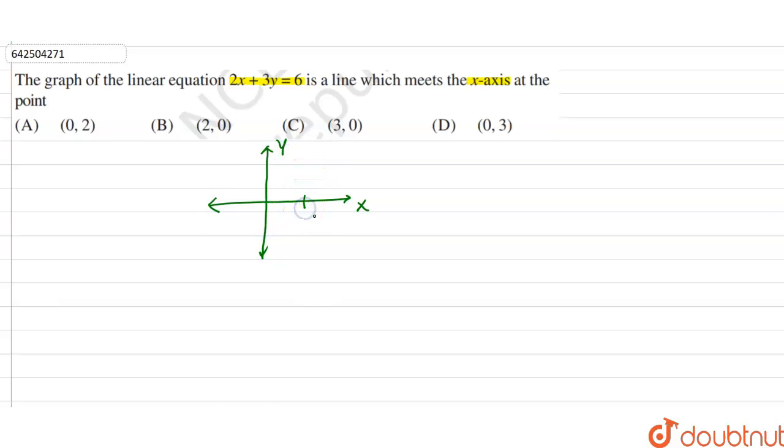So on x-axis, the coordinates of y are 0. And on y-axis, the coordinates of x are 0.